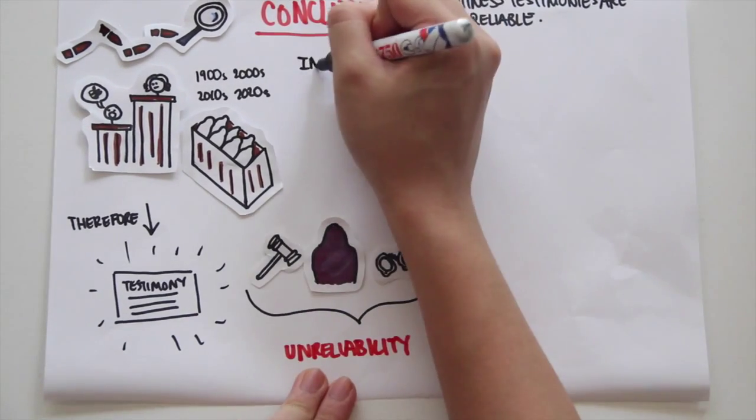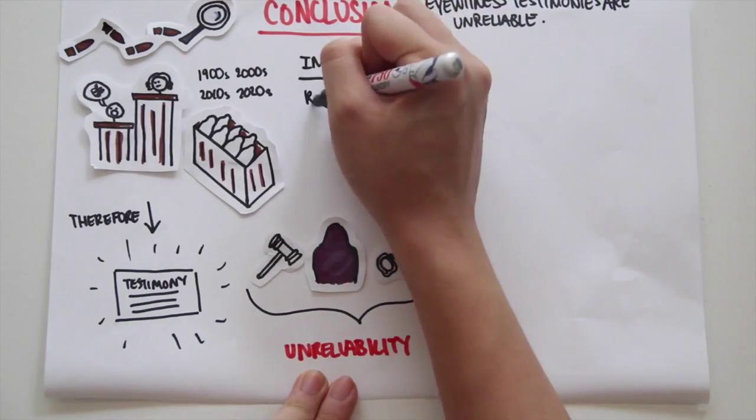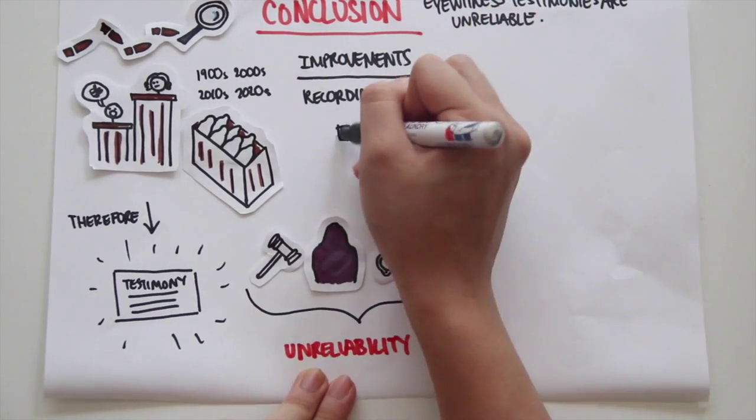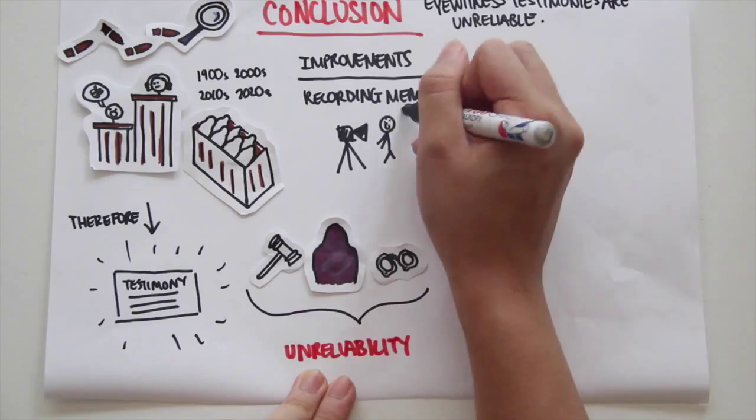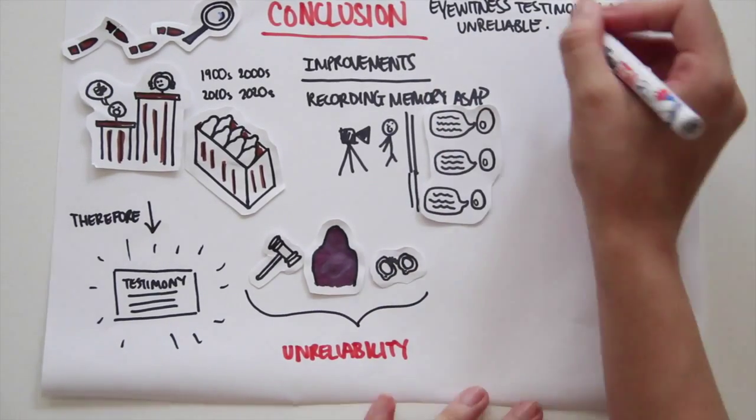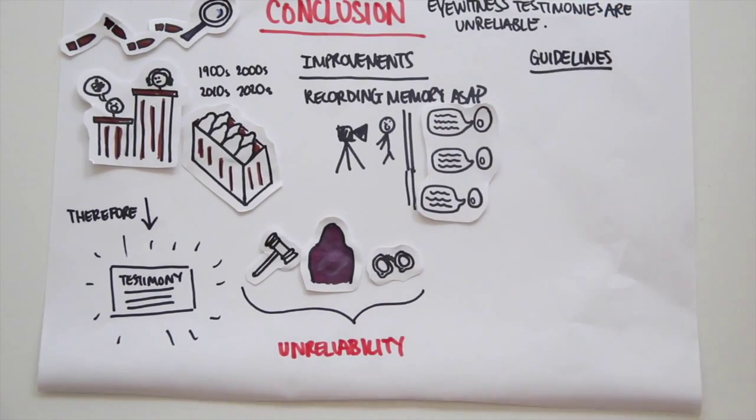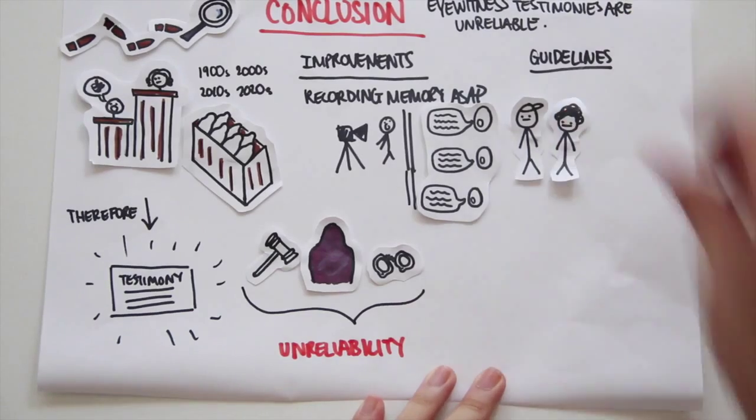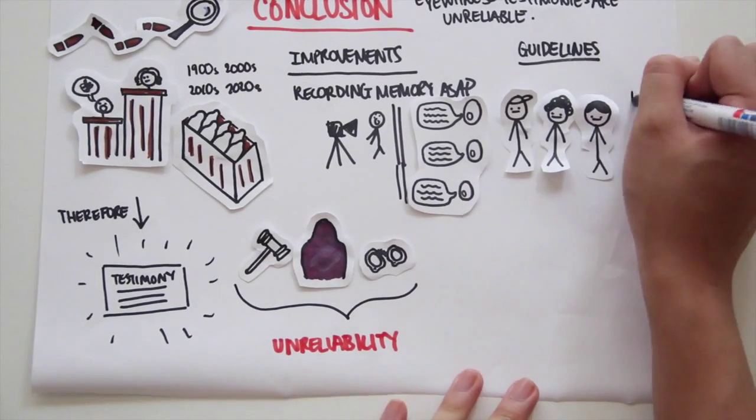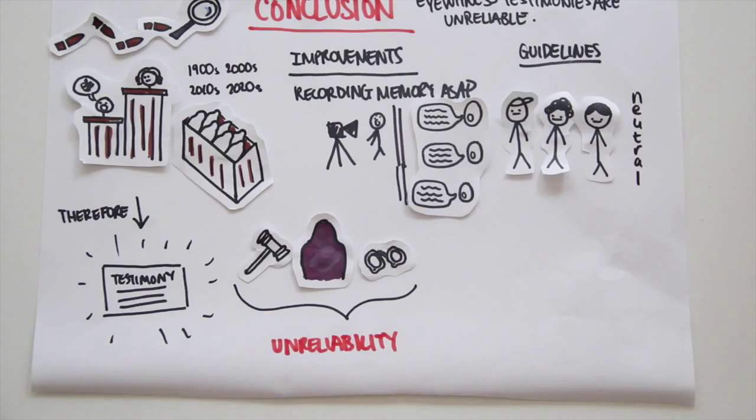There have been certain methods that attempt to improve the reliability of eyewitness testimonies, such as recording the memory as soon as possible, so there's less chance they will be warped by hearing the accounts of others. There are also guidelines to make the police lineup as neutral as possible to avoid subtly influencing the witness to pick the wrong suspect.